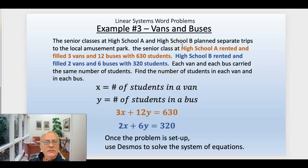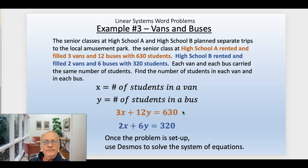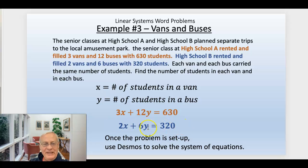Then read the sentence. High school A, shown in reddish orange, filled three vans — that's 3x — and 12 buses — 12y — with 630 students. High school B rented and filled two vans and six buses, so that's 2x plus 6y for a total of 320 students. Once it's set up, you can use Desmos, or you can use elimination by multiplying that second equation by negative 2 to eliminate the Y.